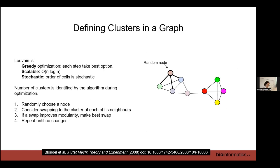Louvain optimizes a set of clusters to get the highest modularity score possible in a fast way applicable to large networks. It starts greedy — taking steps iteratively making the best choice at each step — which makes it fairly fast, but it's also stochastic: it randomly picks the order of steps. You randomly choose a node, start with every cell in a different cluster, then ask: if I merged this cell with a neighboring cluster, does my modularity score go up? If yes, merge it, and keep doing that until clusters stop changing.